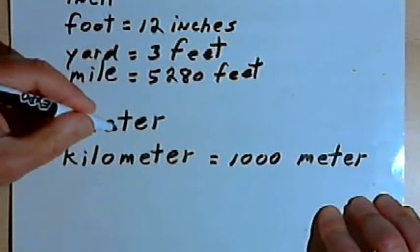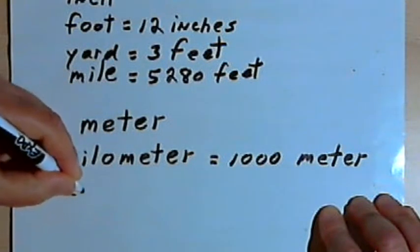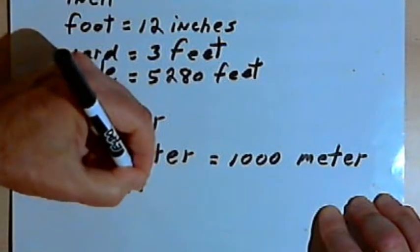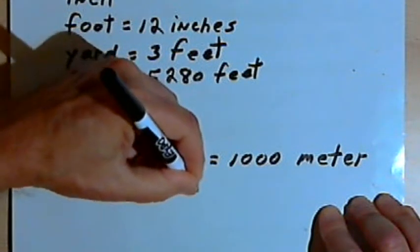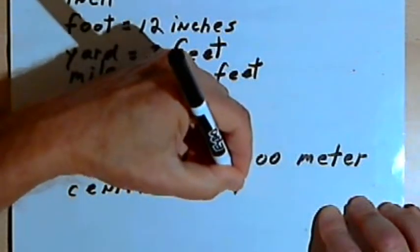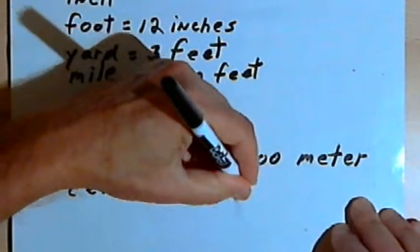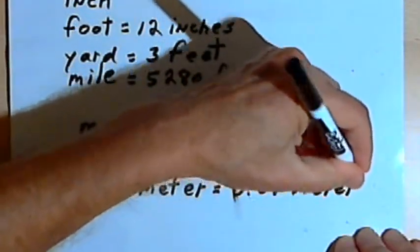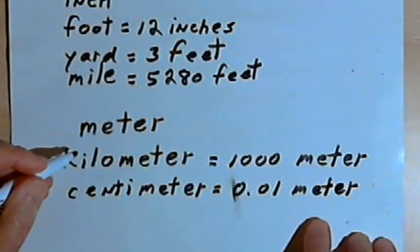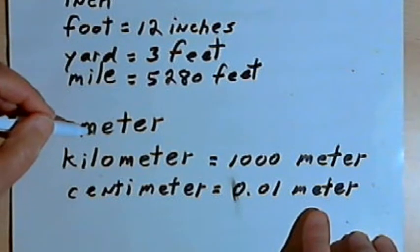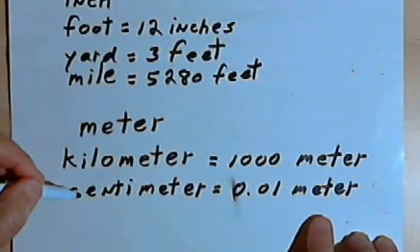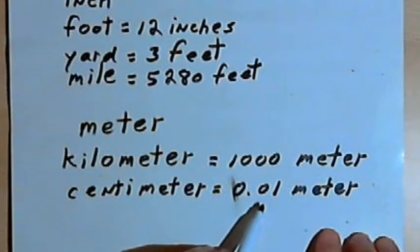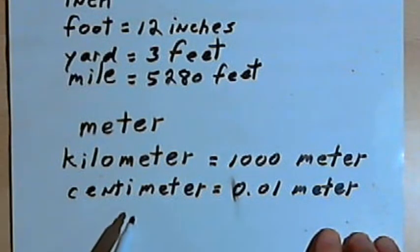Now we can have units smaller than a meter. We can have a prefix centi, which means one-hundredth, and a centimeter is going to be one-one-hundredth of a meter. And once again, it would be fairly easy to convert. If we had five meters and we want to convert it to centimeters, we would just multiply that 5 times 100 to find out how many hundredths there were, and that would be 500 centimeters.